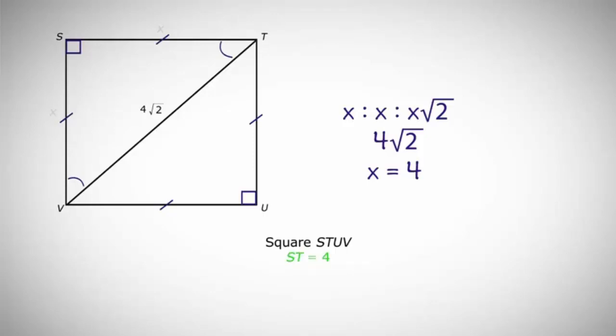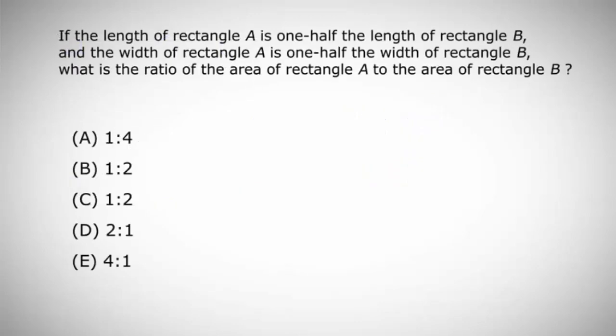Now let's take a look at a test question that looks at quadrilaterals. Number 9 says, if the length of rectangle A is one half the length of rectangle B, and the width of rectangle A is one half the width of rectangle B, what is the ratio of the area of rectangle A to the area of rectangle B? The first step is to draw a diagram. Let's draw rectangle A and rectangle B.